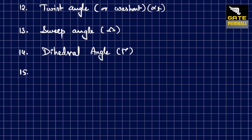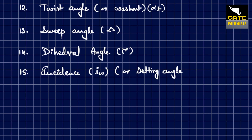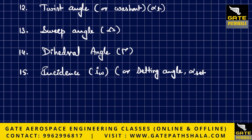Then the wing incidence, denoted by iw, which is the wing setting angle with reference to the fuselage, also termed as alpha-set (αset).